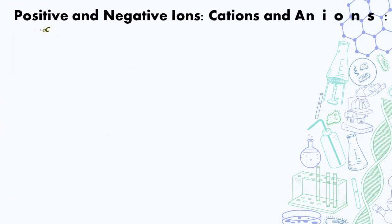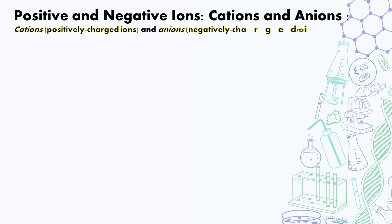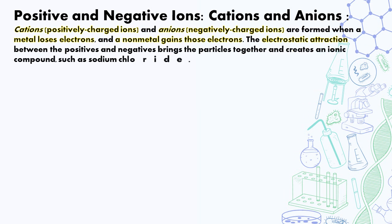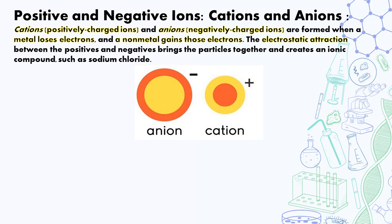Now let us see what is a positive and negative ion, a cation or an anion. Cations are positively charged ions and anions are negatively charged ions. They are formed when metal loses electrons and a non-metal gains those electrons. The electrostatic attraction between the positive and negative brings the particle together and creates an ionic compound such as sodium chloride. You can see the negative ion and the positive ion.